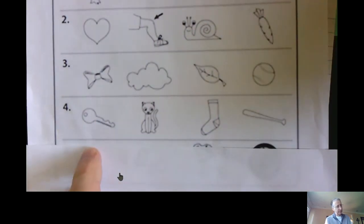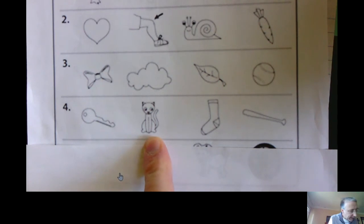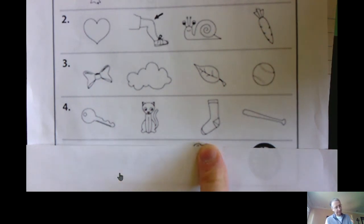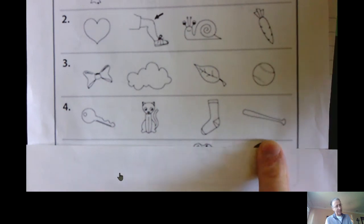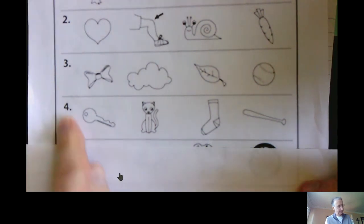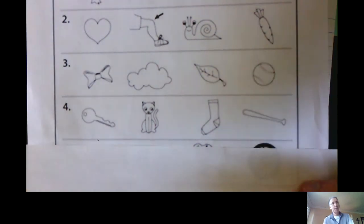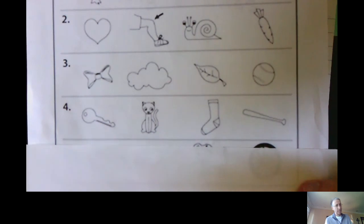Again, look at each picture and listen to the vowels as I sound them out. Say it with me. Key, cat, sock, bat. Which one has the long E sound? Long E is key.